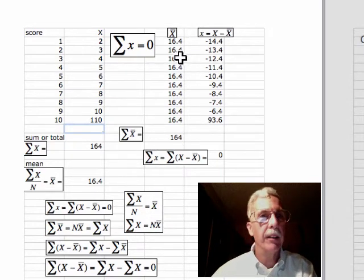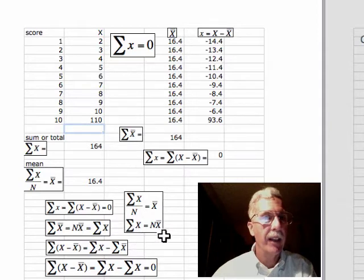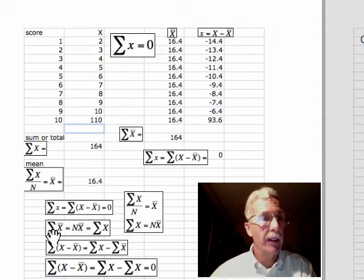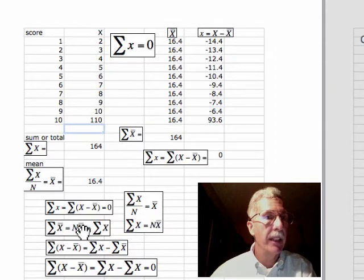So up here, we had 16.4 times 10, that's 164. That's n times the mean. So that's reproduced here. The sum of the means is equal to n times the mean, and that's equal to the sum of the raw scores.